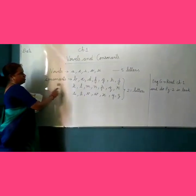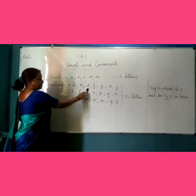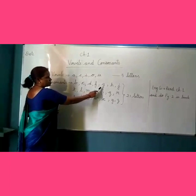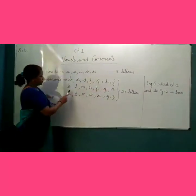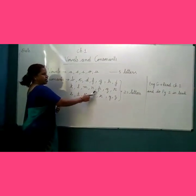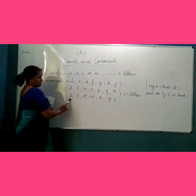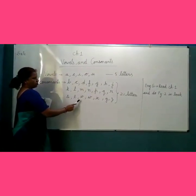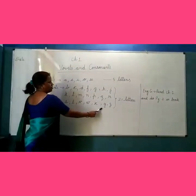Now, here are the consonants: B, C, D, F, G, H, J, K, L, M, N, P, Q, R, S, T, V, W, X, Y, Z.